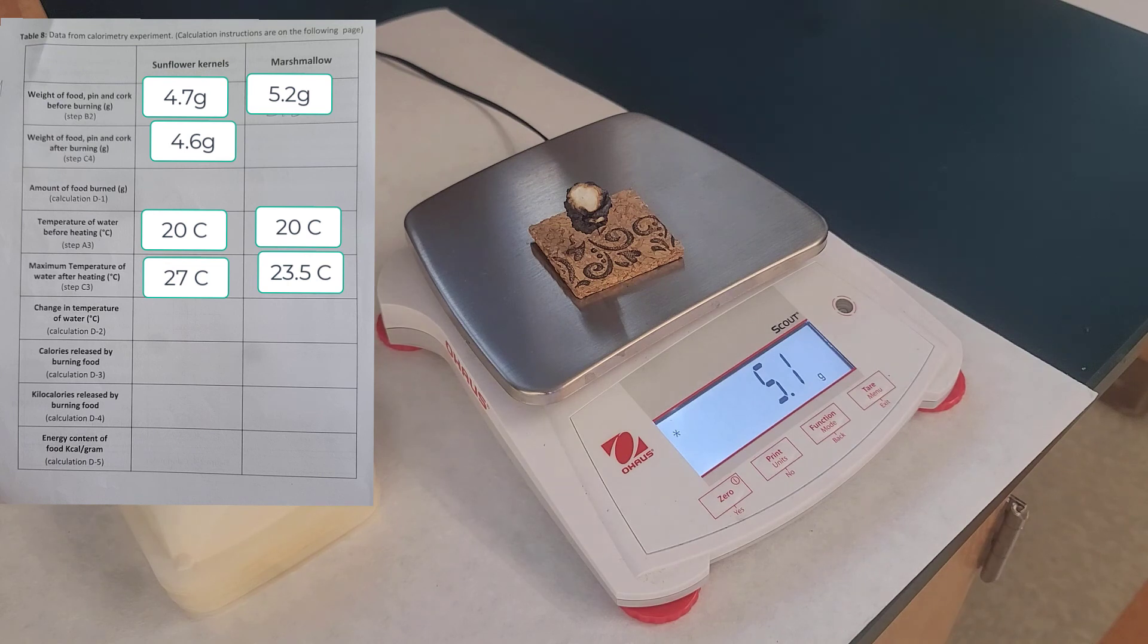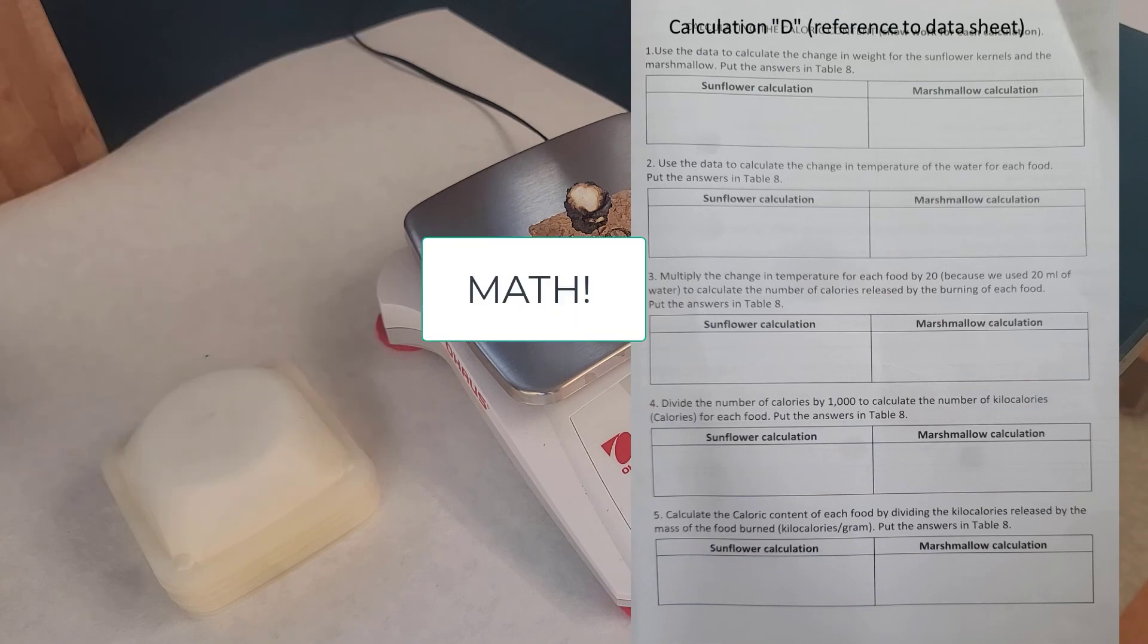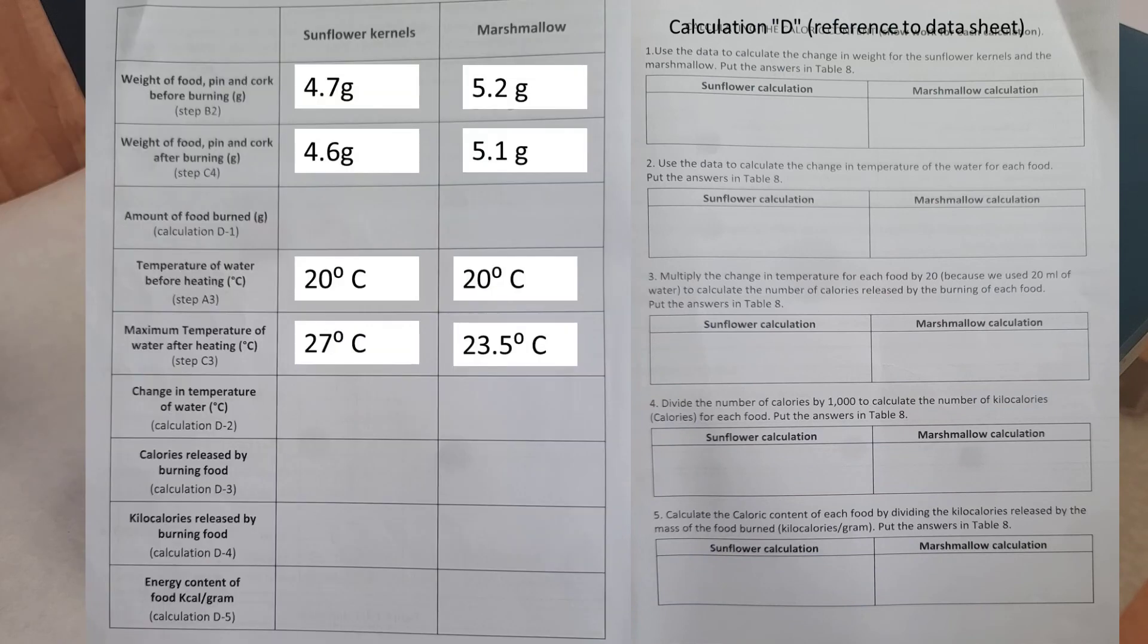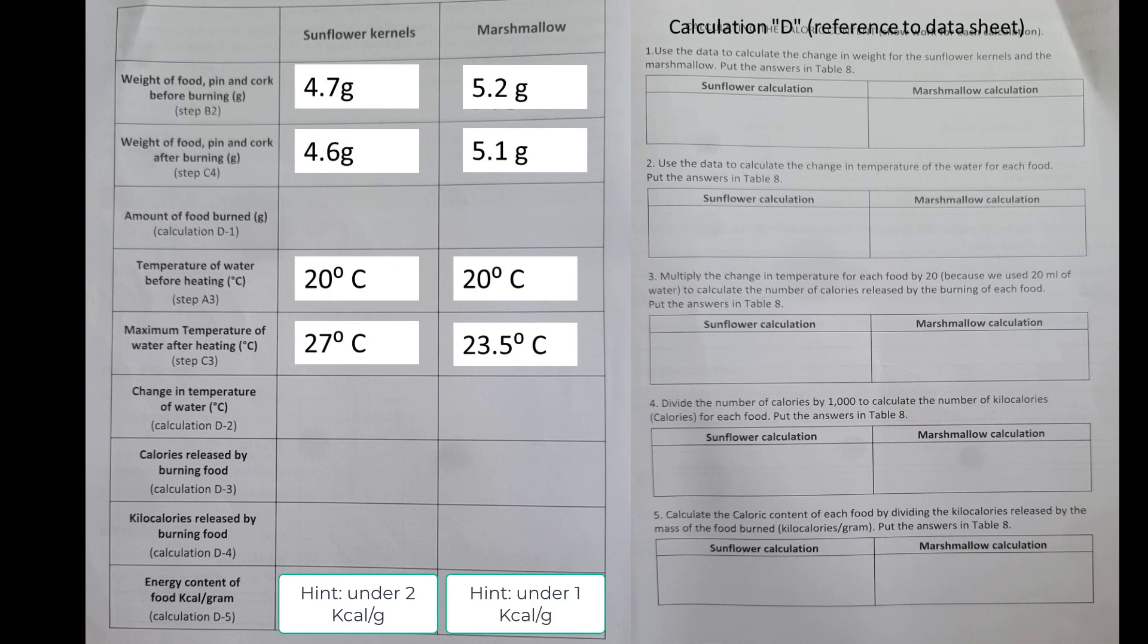All right, now to calculate calories, we just have to do a little bit of math. While I won't do the math for you, I'll give you a hint and tell you that I ended up with under two kcals per gram for sunflower seeds and under one kcal per gram for marshmallows, which means my device is probably somewhere around maybe 30 percent or 40 percent accurate. Now you try to do your own calculations and see what you get, and put your answers down in the comments below.